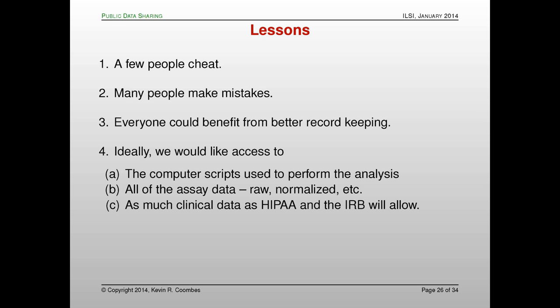The summary: a few people cheat, many people make mistakes, and everyone could benefit from better record keeping. The argument I've made repeatedly is that we'd like all data publicly available. The code used to do the analysis should be part of what's made public, because that's the real science when you're analyzing big data. All assay data should be publicly available, as works in GEO when people deposit it. But a lot of clinical data is missing, partly due to HIPAA constraints on what US scientists can share, partly because IRBs restrict it, and partly because people don't want to make it easy for others to use their data. There are cultural issues as well.